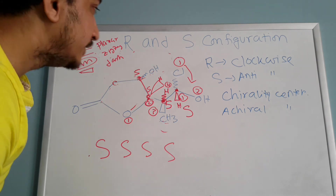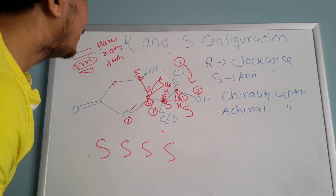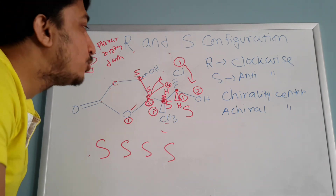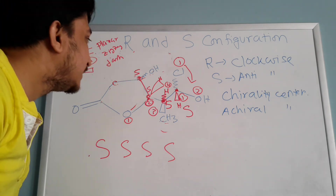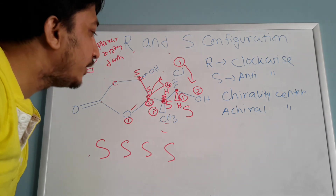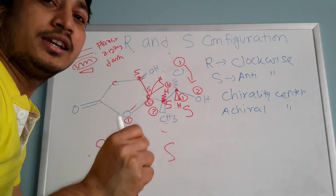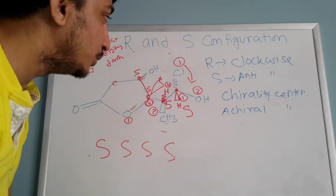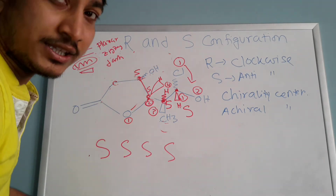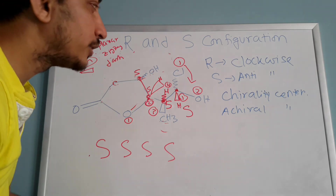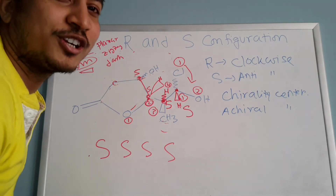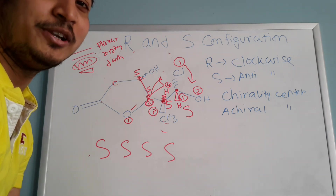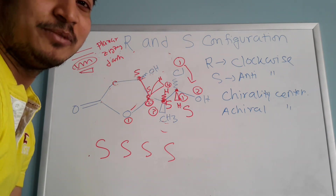So we find out all four configurations are S, S, S, S. In this way you can find out your R and S configuration. This is my first video about R and S configuration. I will make more videos about more complicated cases, but if you understand this one, you can figure out any kind of R and S configuration. If you really like it, don't forget to share with your friends and subscribe. Study hard — thank you for watching!